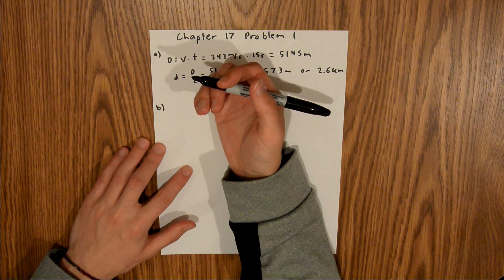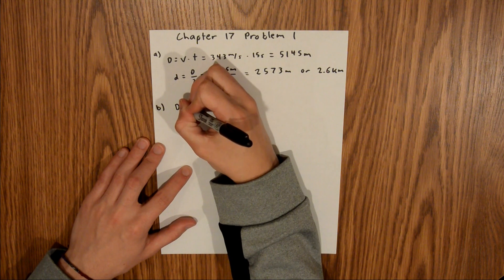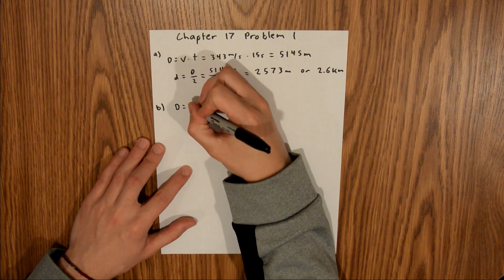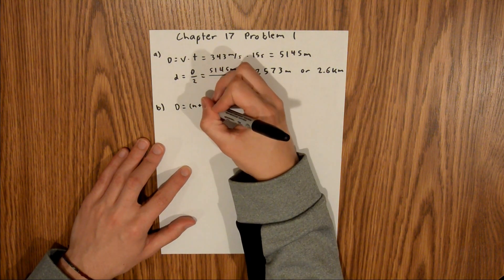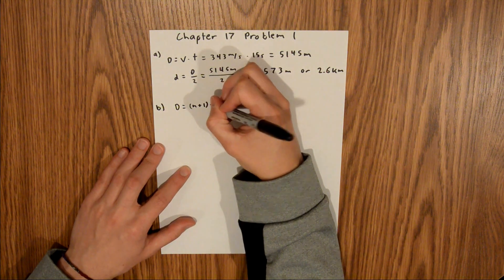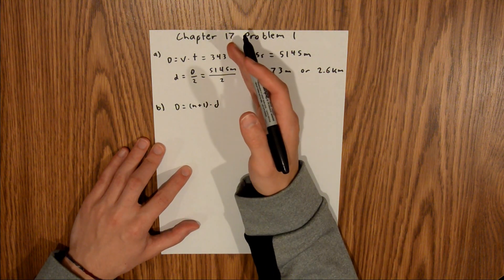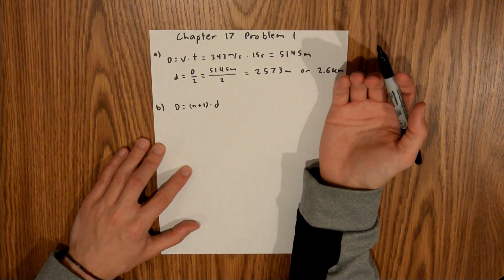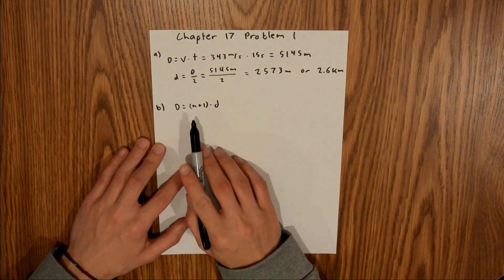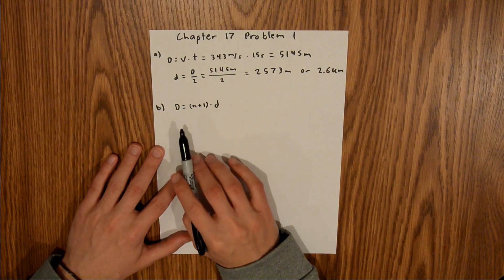Total distance equals the number of times reflected plus 1, times the distance from your source to the object you're reflecting off of. We need to find N, so we can divide by D.